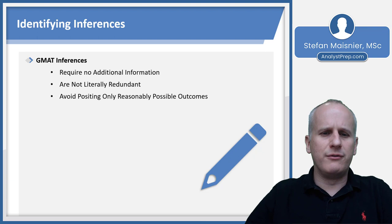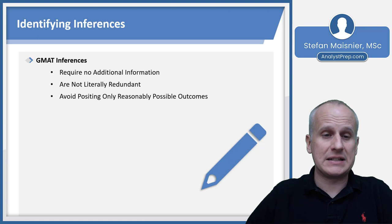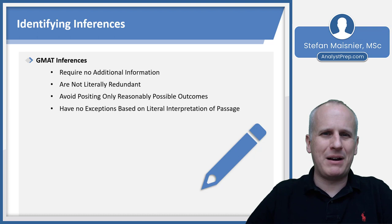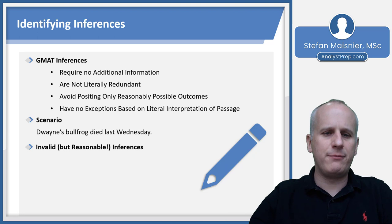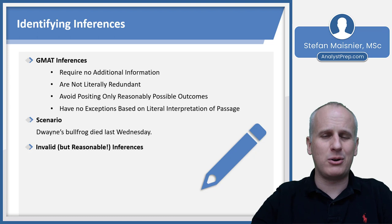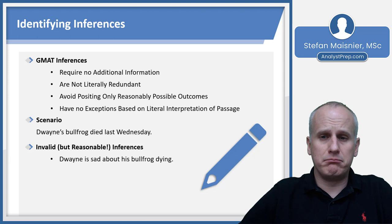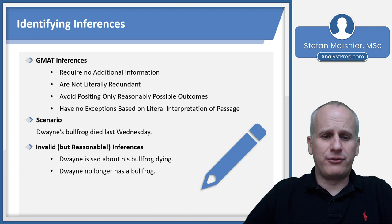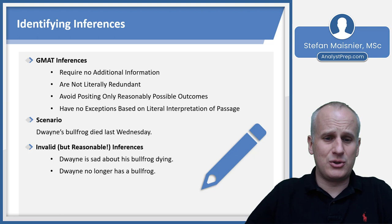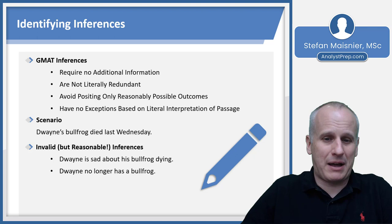You can also train yourself to avoid predicting reasonably possible outcomes that aren't necessarily certain. Whatever your GMAT inference is must have no exceptions based on your literal interpretation of the information in the passage. Consider this scenario: if Dwayne's bullfrog died last Wednesday, there are many invalid but reasonable inferences you can make — such as Dwayne is sad about his bullfrog dying, but we don't know that for certain. Similarly, 'Dwayne no longer has a bullfrog' is reasonable but not definitive, because theoretically Dwayne could have a bullfrog farm where some number of bullfrogs die on a regular basis.